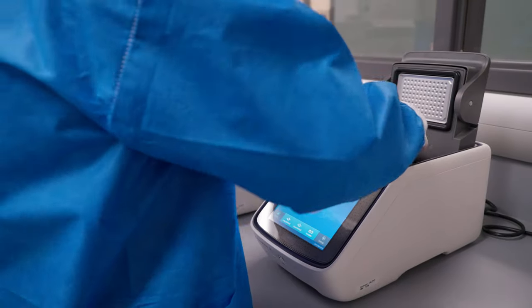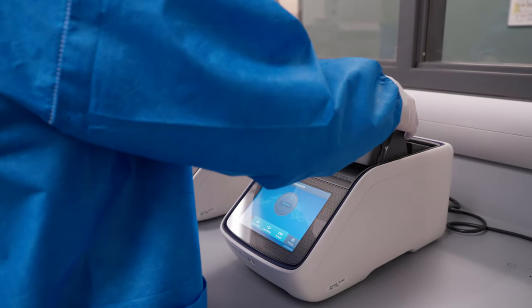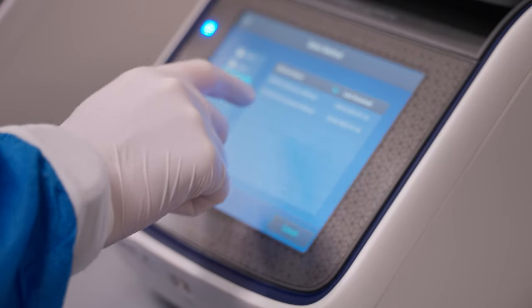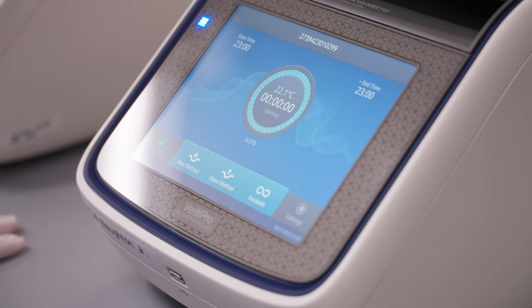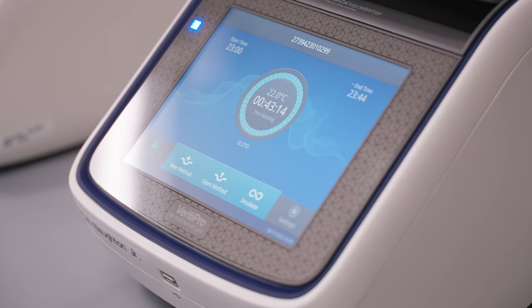The instrument used to perform the PCR process is called a thermocycler. It contains an extremely precise heat block that raises and lowers the temperature of the samples at specific times. During this process, the DNA is heated to near boiling temperatures.